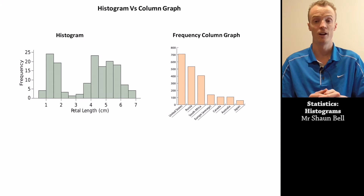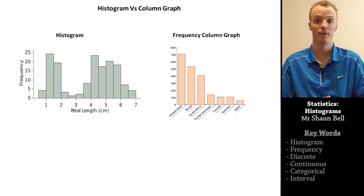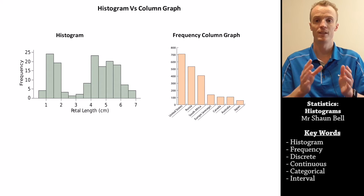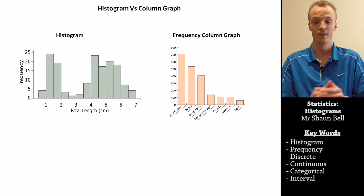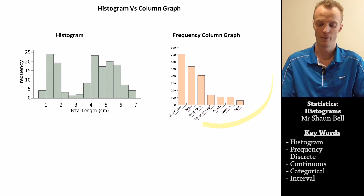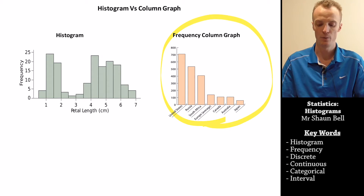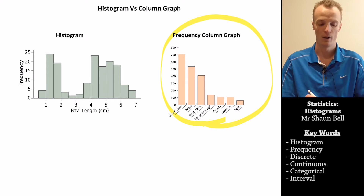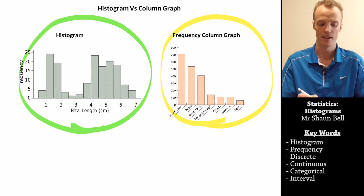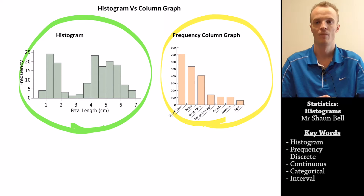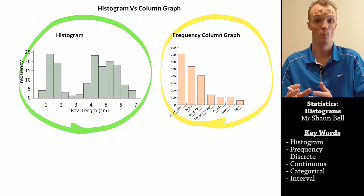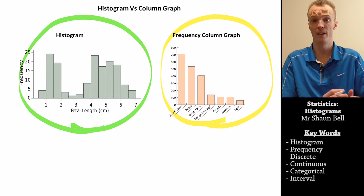Histograms and column graphs are very similar things, so it's very important that we distinguish the difference between them. A column graph, as we can see here, has little gaps in between each of the bars, whereas a histogram doesn't have any of those gaps. You might be wondering why we have gaps in one and not the other.